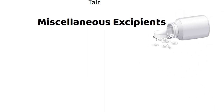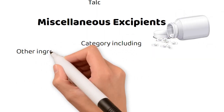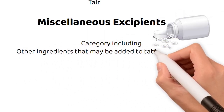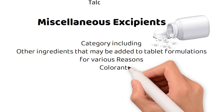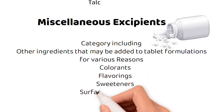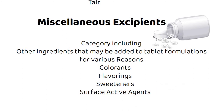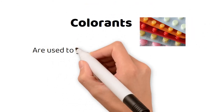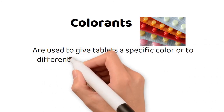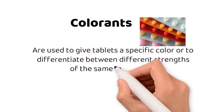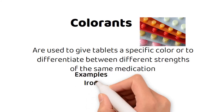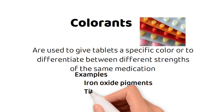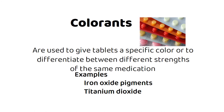Lastly, we have miscellaneous excipients — a category including other ingredients that may be added to tablet formulations for various reasons, such as colorants, flavorings, sweeteners, and surface active agents. Colorants are used to give tablets a specific color or to differentiate between different strengths of the same medication. Examples of colorants include iron oxide pigments and titanium dioxide.